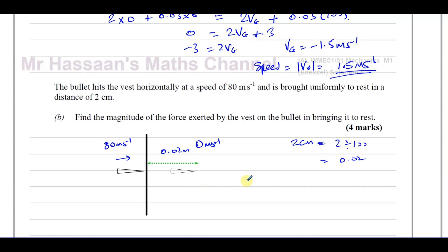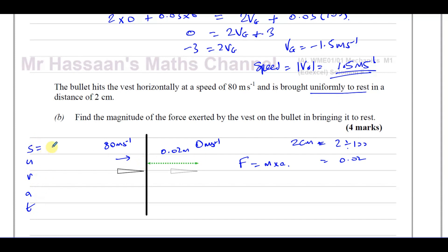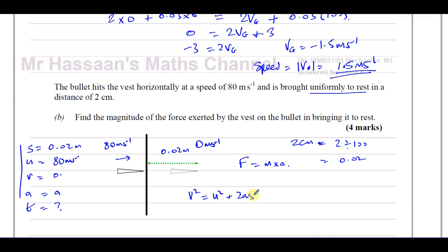We need to find the acceleration because force equals mass times acceleration. Since the bullet is brought uniformly to rest, there is uniform acceleration and we can use SUVAT. We know S = 0.02 m, U = 80 m/s, V = 0, and we want A. Using V² = U² + 2AS will help us find the acceleration.